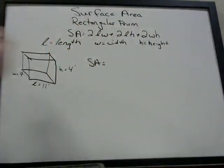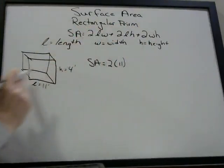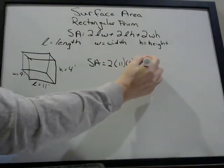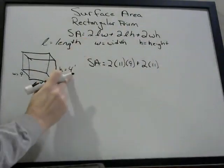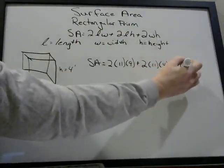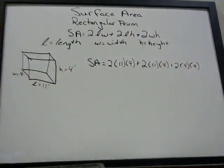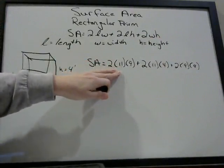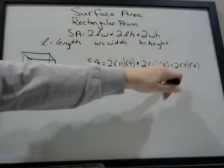Surface area, SA, equals 2 times length — length is 11 — times width — width is 9. Remember when we write things beside each other in parentheses, that means multiplication. Plus 2 times length, which is 11, times height, which is 4. Plus 2 times width, which is 9, times height, which is 4. Then we just have to evaluate this — you can get your calculator out. You need to know the order of operations, so we're going to do each of the multiplications first before we add them together.